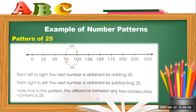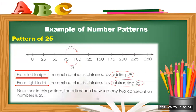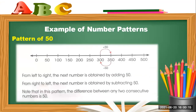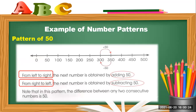Here is another example: the pattern of 25. From left to right, the next number is obtained by adding 25, and from right to left by subtracting 25. And here we have the pattern of 50 — from left to right it is plus 50, and from right to left it is minus 50, or subtracting 50.